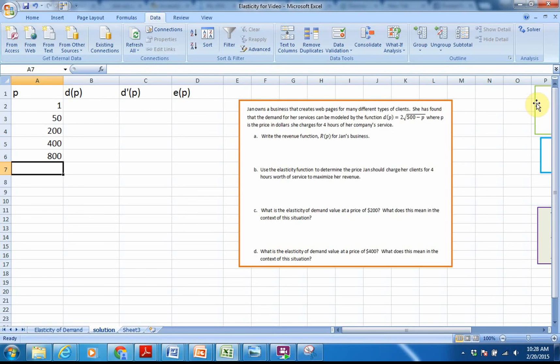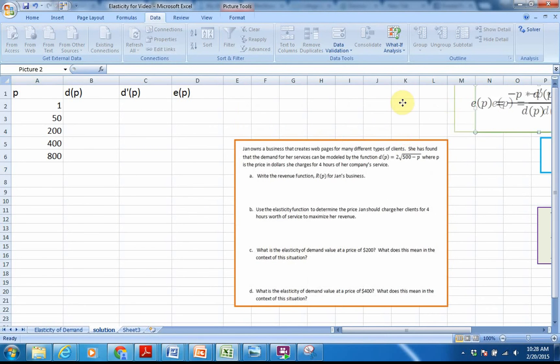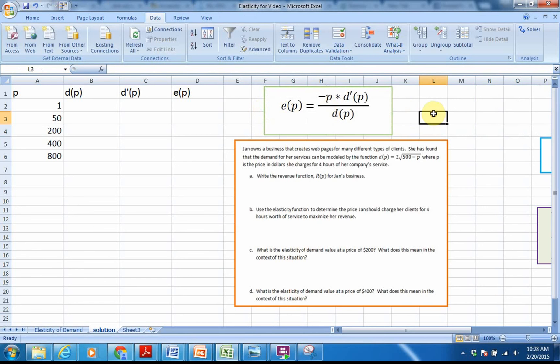Now, what I do want to do is pull out my elasticity function. Because if you've not looked at what the elasticity function is, we need to break that down. Elasticity is the opposite of price times the derivative of the demand function all over the demand function. And in Excel, if we have set up P, D of P, D prime of P, then it's going to be very easy for us to be able to do E of P.